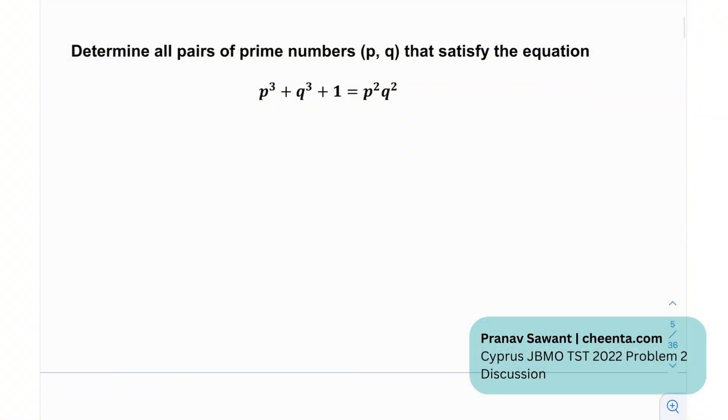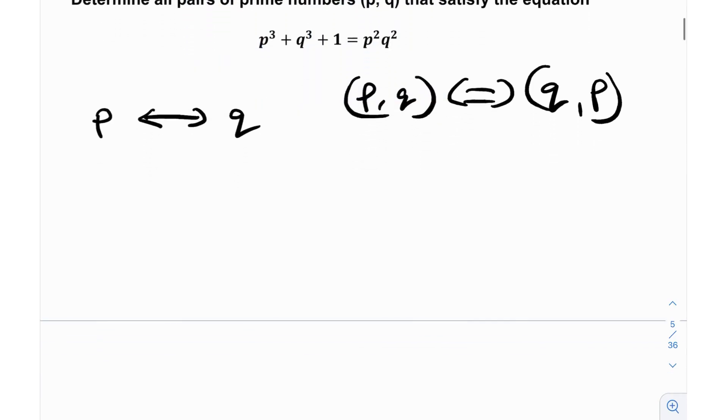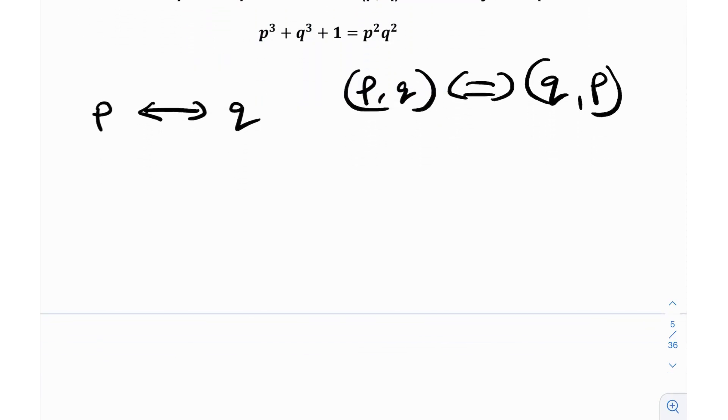The goal is to determine all pairs of prime numbers p, q that satisfy this given equation. The first thing I notice is that it's a symmetric equation. If I replace p with q and q with p, the equation is exactly the same. This means if p, q is a solution, then q, p will also be a solution. This is obviously because it's symmetric.